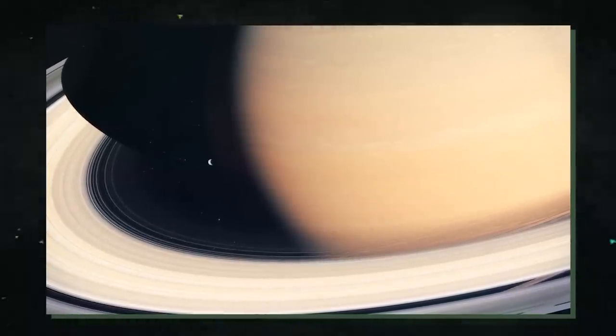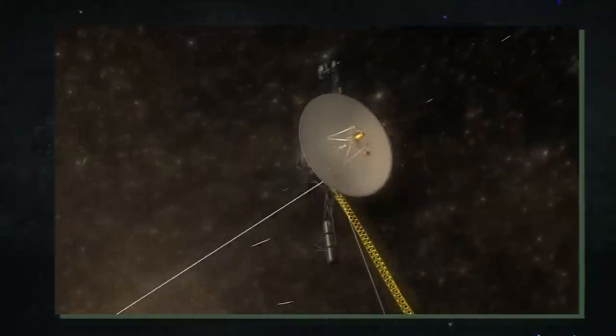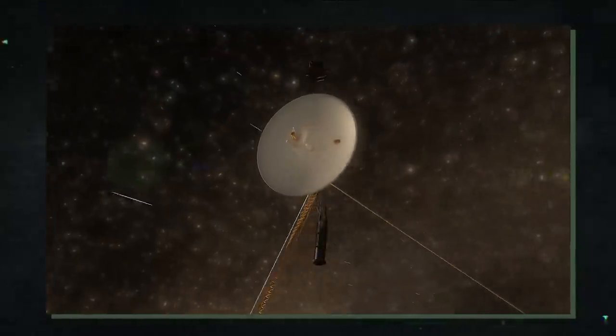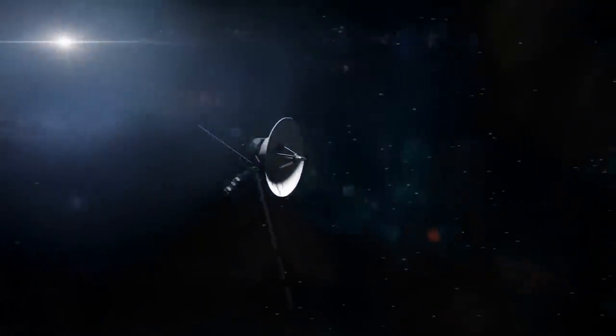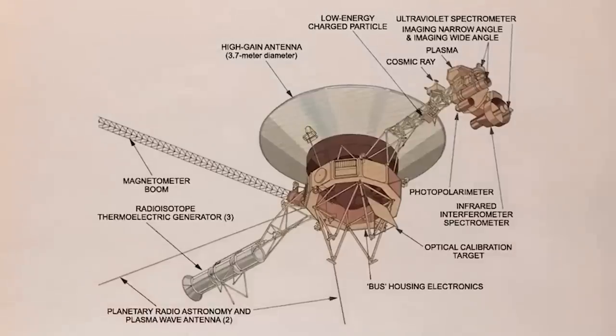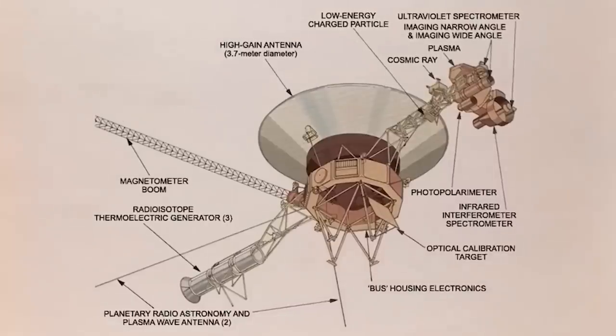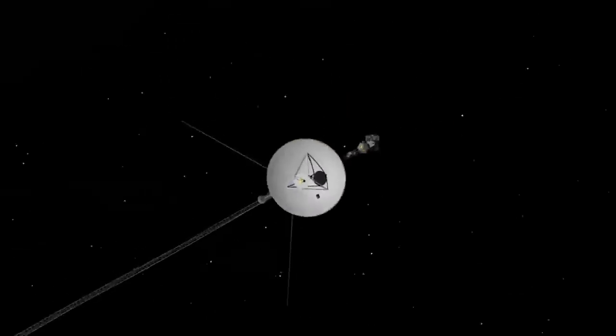8-track tape recorders are used to store all the data that the spacecraft instruments gather before being broadcast to Earth by a 23-watt transmitter, which has about the same power as a refrigerator light bulb. Both Voyagers are equipped with 12 feet wide dish antennas for sending and receiving messages in order to make up for the feeble transmitter.